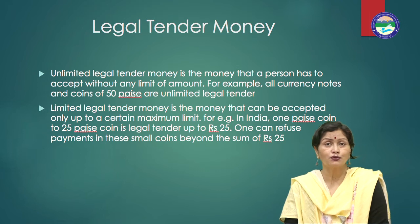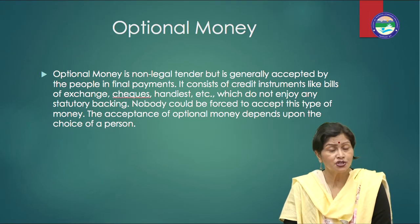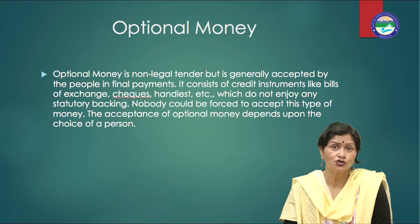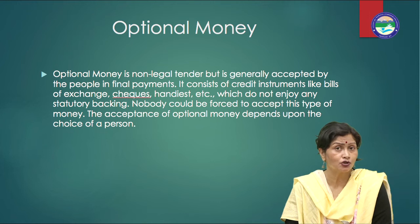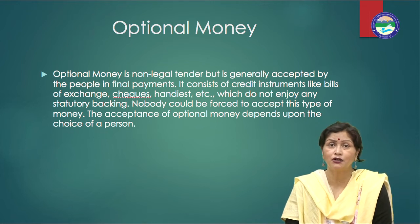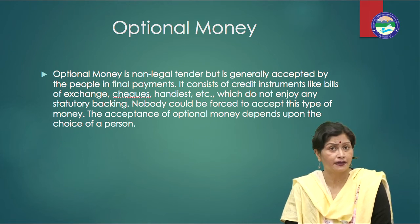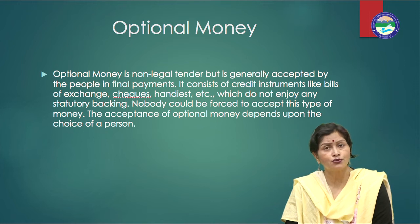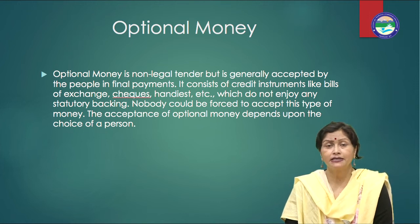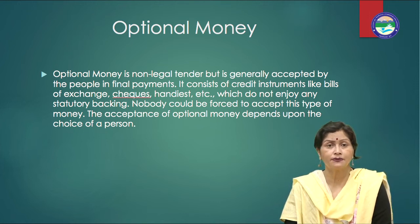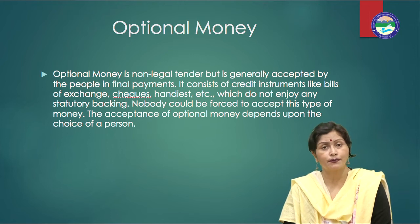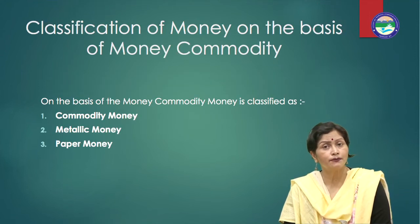Now let us talk about optional money. Optional money is non-legal tender but is generally accepted by the people in final payments. It consists of credit instruments like bill of exchange, cheques, hundis, etc., which do not enjoy any statutory backing. Nobody could be forced to accept this type of money. The acceptance of optional money depends upon the choice of a person.